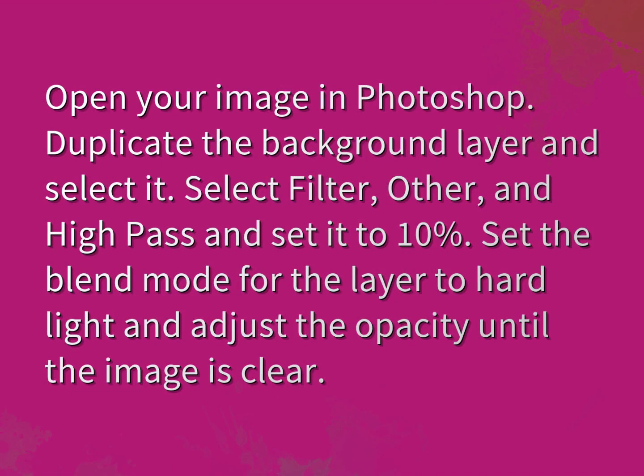Open your image in Photoshop. Duplicate the background layer and select it. Select Filter, Other, and High Pass and set it to 10%. Set the blend mode for the layer to Hard Light and adjust the opacity until the image is clear.